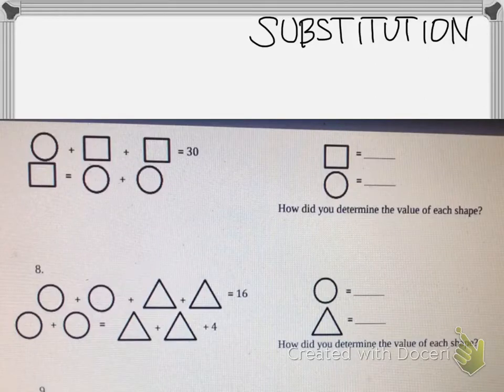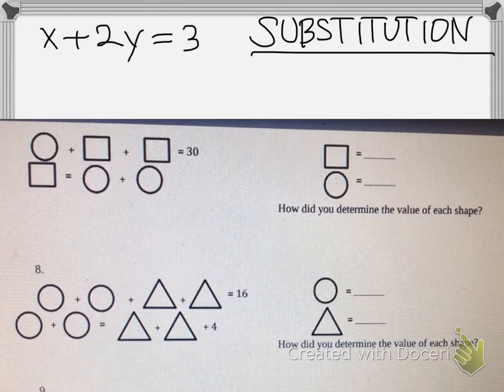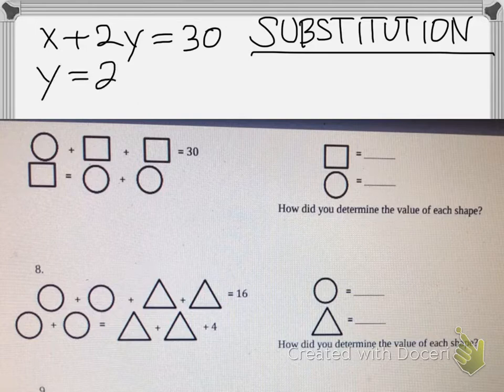Alright, here we go. Substitution is pretty challenging. This problem right here, the way I learned it, I was given x plus 2y equals 30, where x is a circle and y is the boxes. So this is how I would have been given the problem, and then y equals 2x because I have two circles and one y.